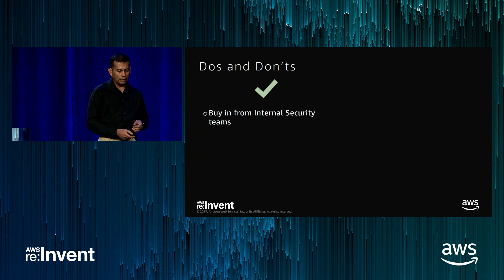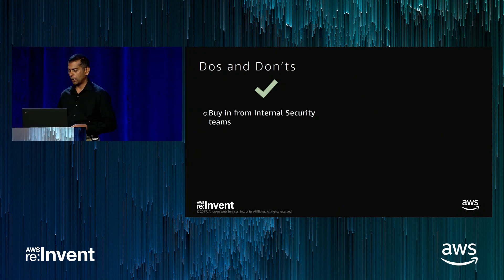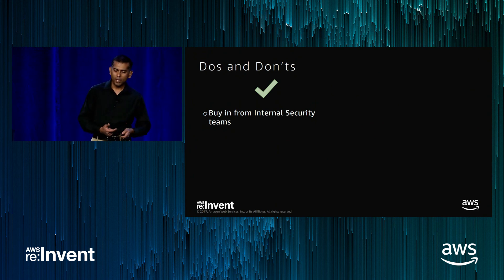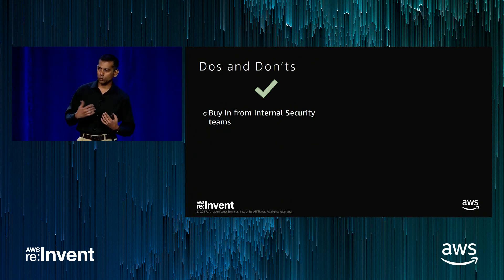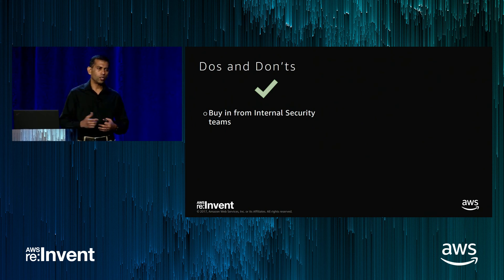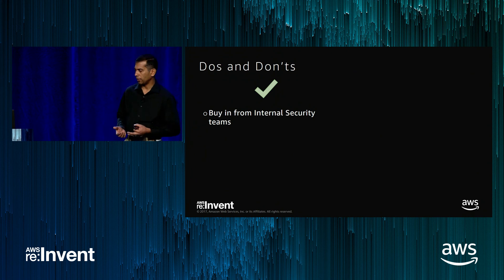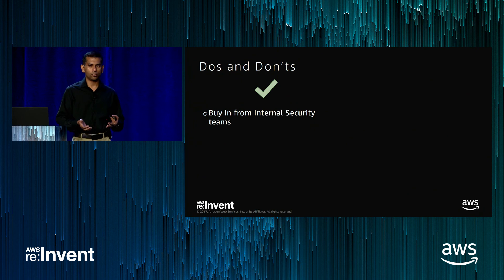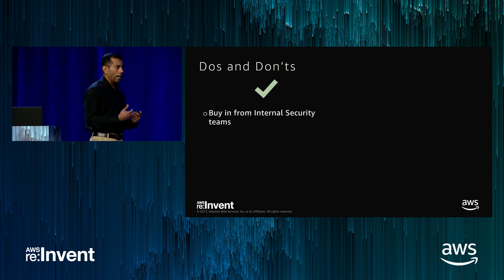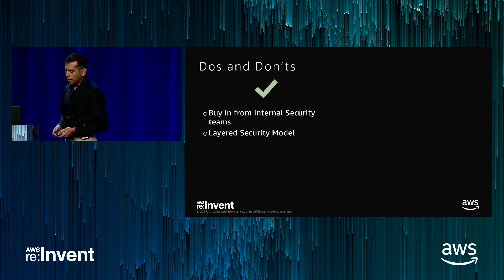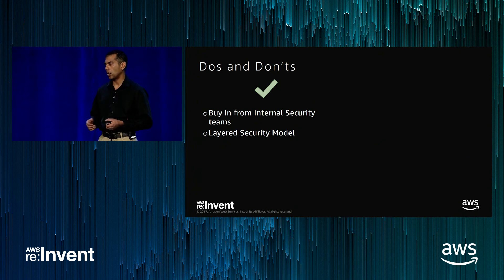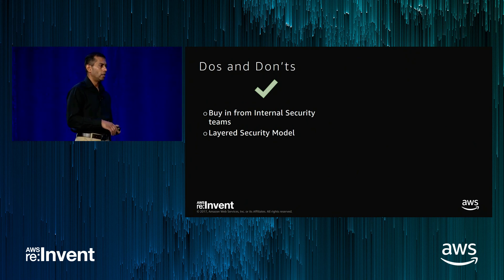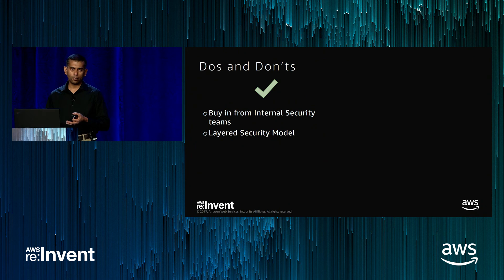For the do's and don'ts: make sure you get buy-in from security teams. You may have a great idea and be able to deliver it quickly, but it may be a security risk. Ensure there's governance, a way to isolate sensitive information from general traffic. Also, follow a layered security model — no single service will solve all your security needs or all your problems. As we saw, we leveraged Route 53, Lambda at the Edge, viewer requests, and multiple services together to solve these use cases. Always look for a layered approach, especially in the area of security.